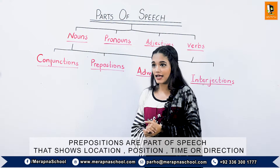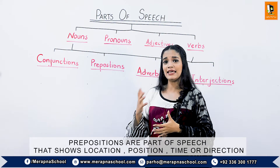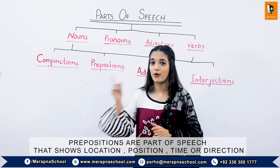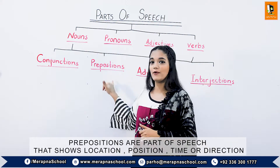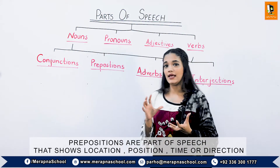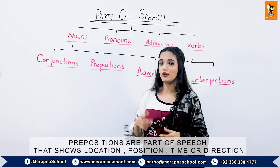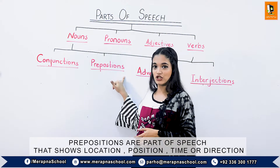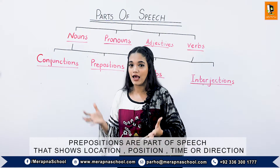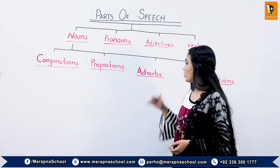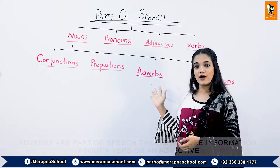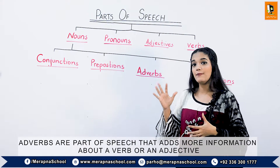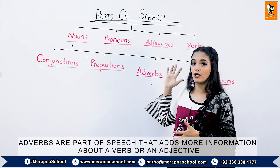Now moving on to prepositions. Prepositions, like their name, show the position of nouns. For example, 'He is sitting on the chair' — the word 'on' is a preposition. Another example: 'The train is passing through the tunnel' — the word 'through' is a preposition because it is showing the position of the noun.